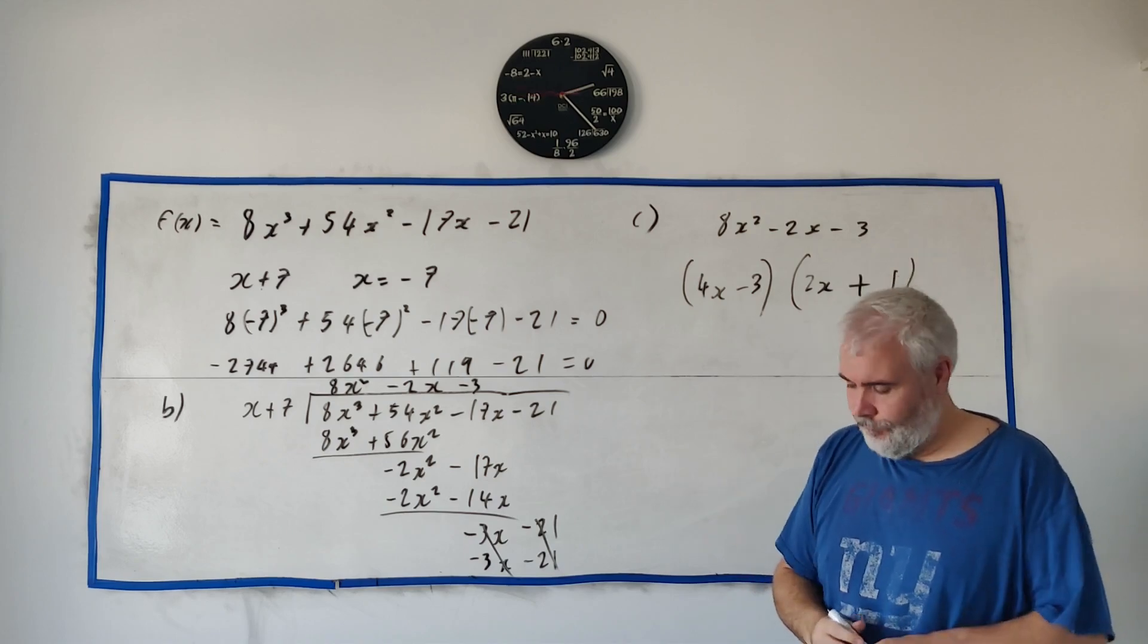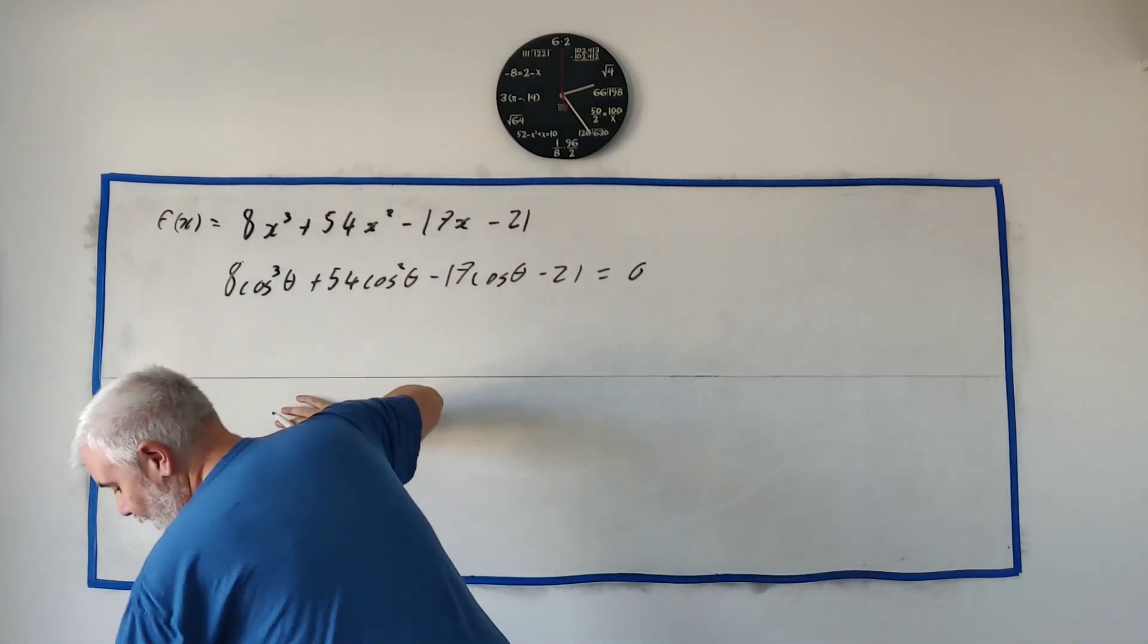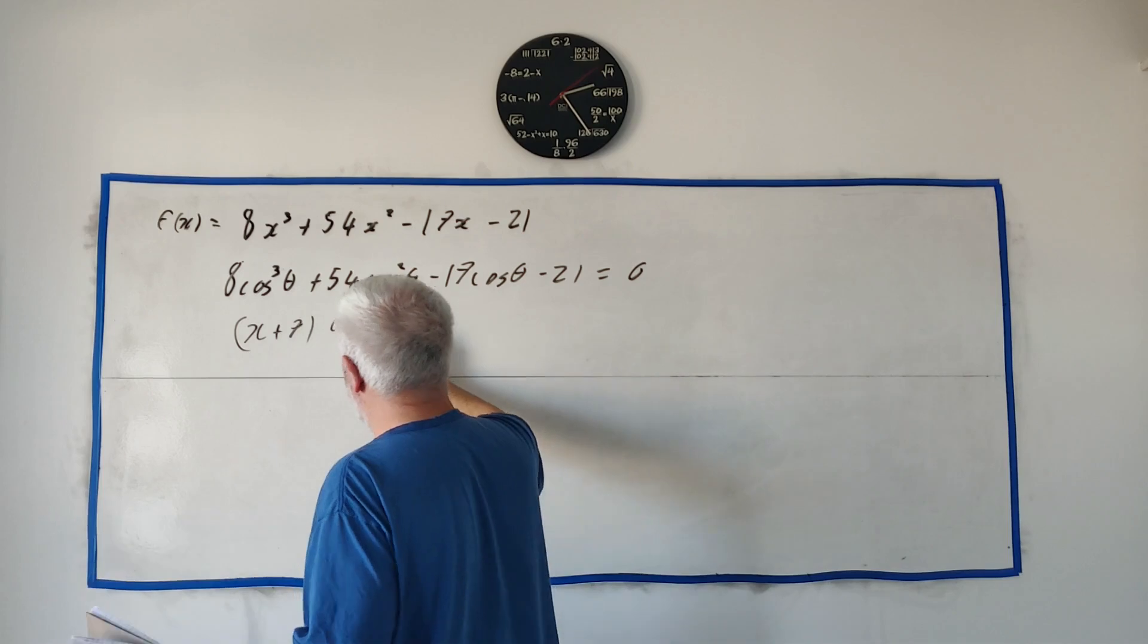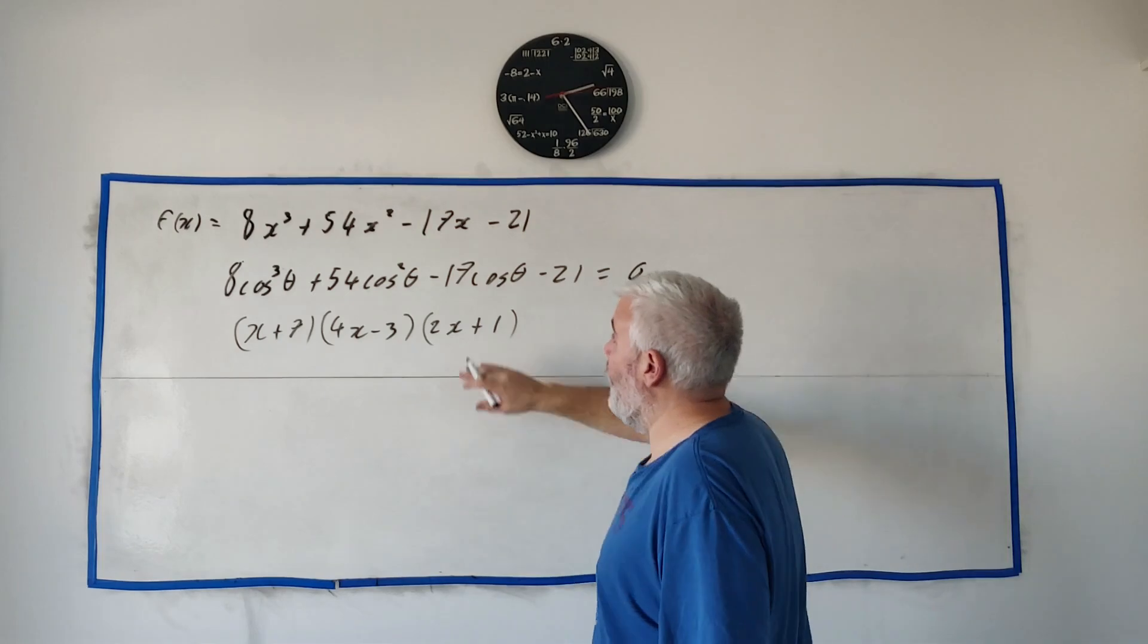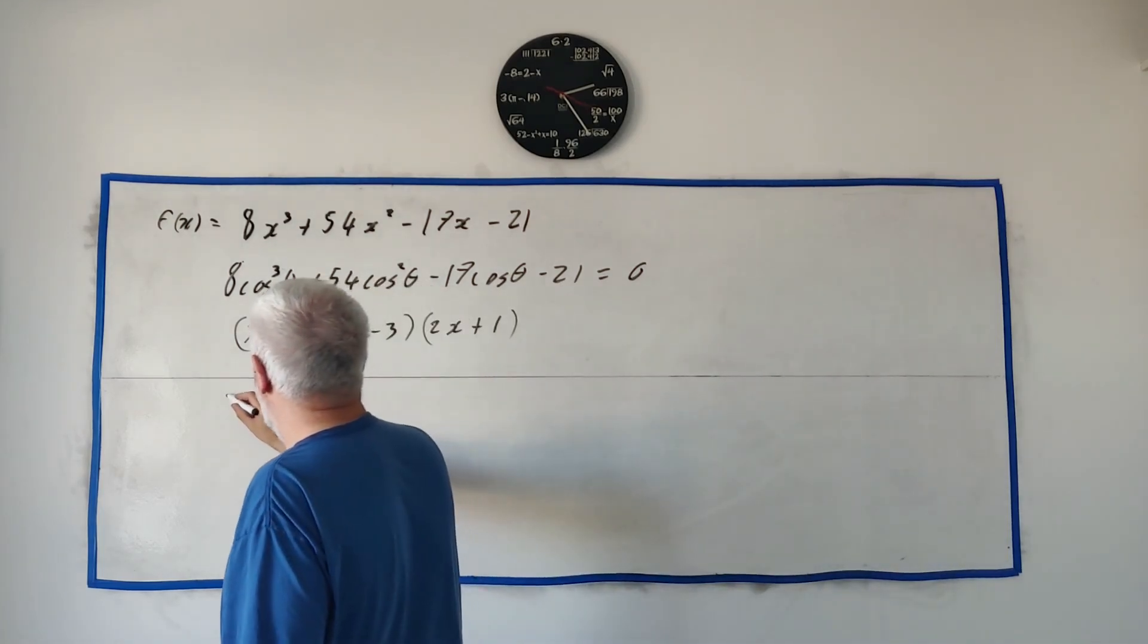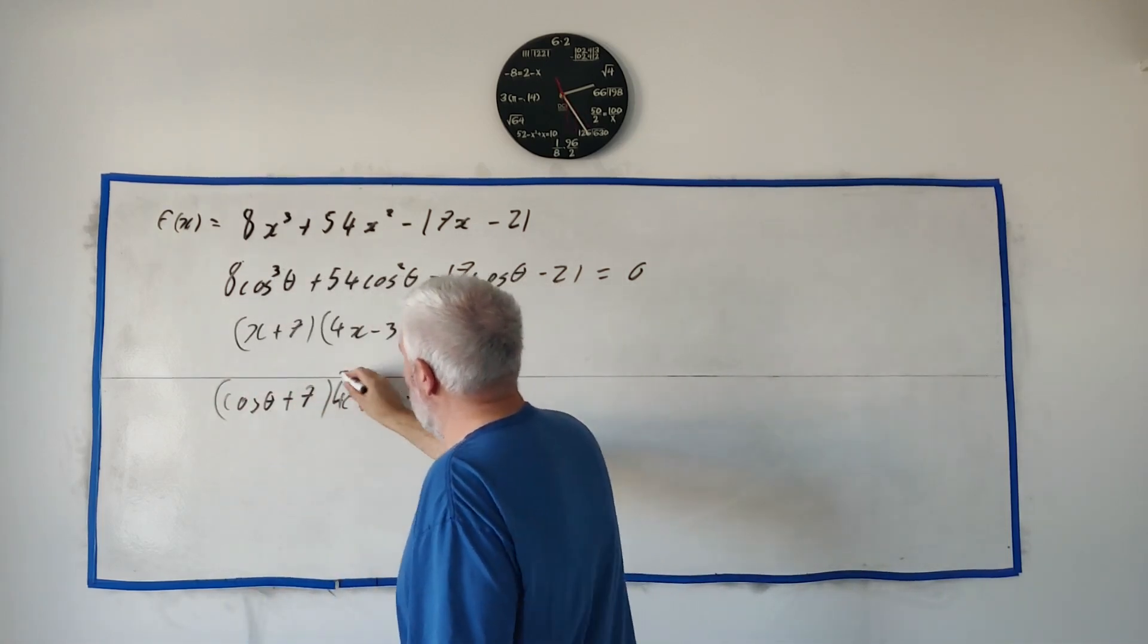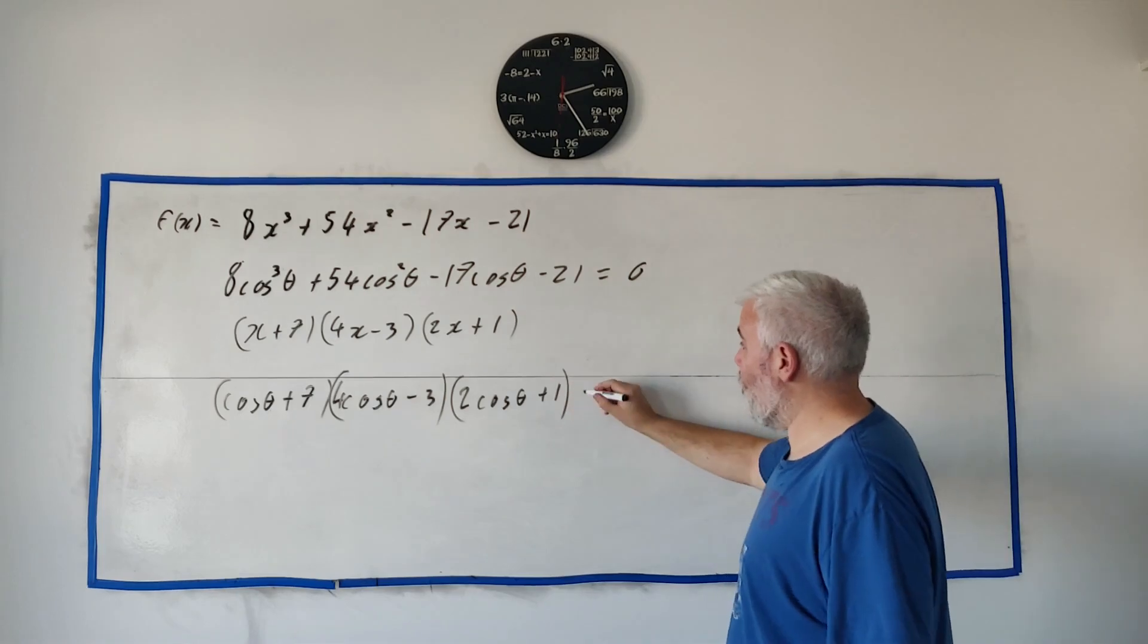So here's what they actually give us in part c they give us this equation here. We need to notice that's the same as up there and then from our previous work we need to know the factors of this is x plus seven, four x minus three and two x plus one. Using this information with cosines just replace all the x's with cosine theta.